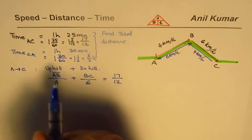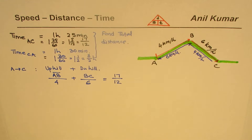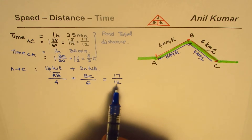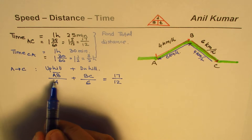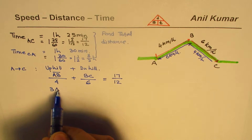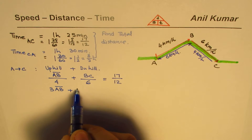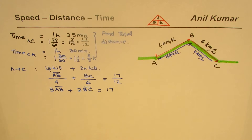We converted one hour 25 minutes to 17 over 12 and formed one equation. Multiplying everything by 12 gives us: 3 times AB plus 2 times BC equals 17. That is our first equation.